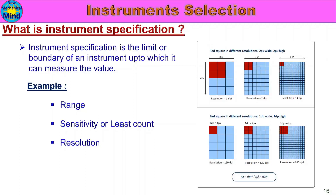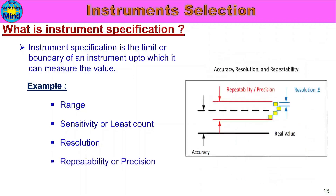Resolution is the instrument's capacity to measure the smallest value. Repeatability or precision means if we check one product multiple times, we should get the same value each time — that consistency is precision. Accuracy refers to how close the measured value is to the true or real value of the part, taking into account instrument error and process error.